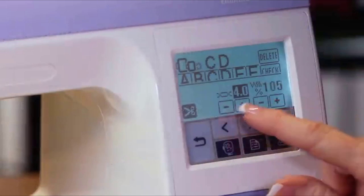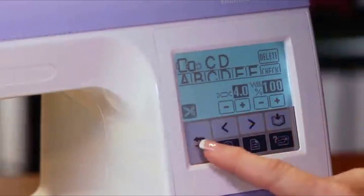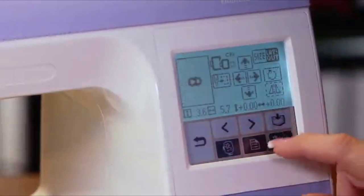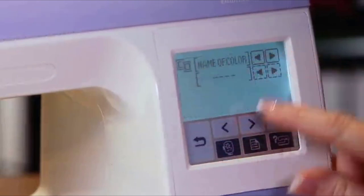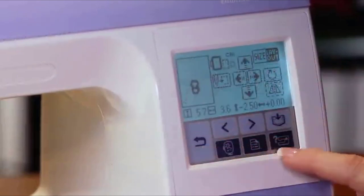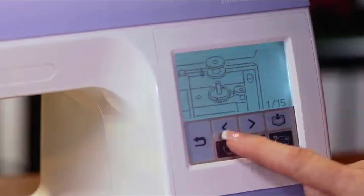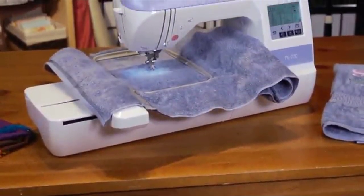Another great feature of the PE-770 is the large backlit LCD screen, which is easy to see and easy to use. Use the screen for design selection and editing, to view the helpful built-in tutorials, to set machine preferences and more.